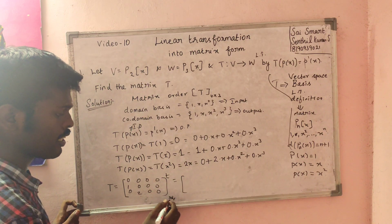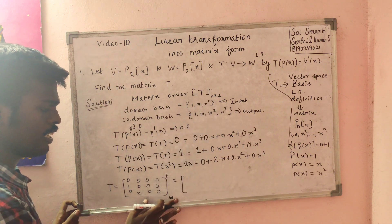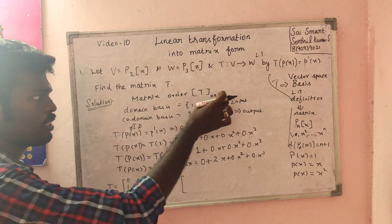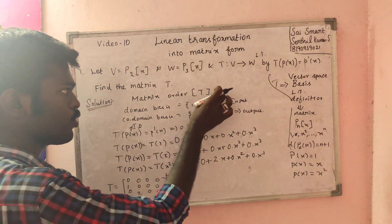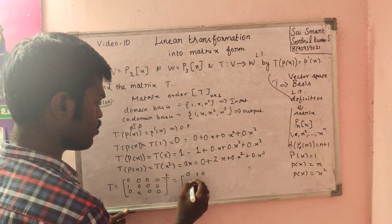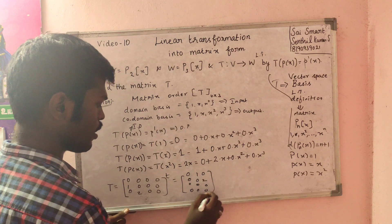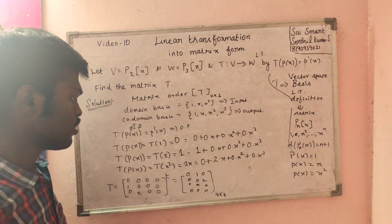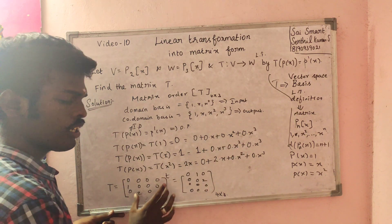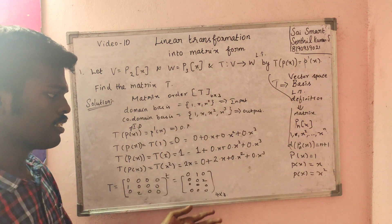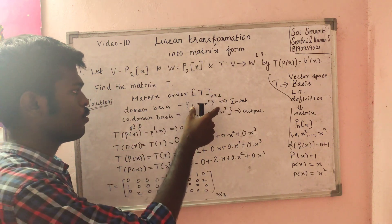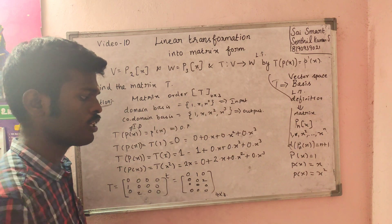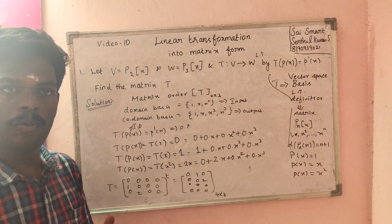The matrix is 4 by 3, not 3 by 4. Transpose confusion should be avoided. We write the transformation columns using domain input and codomain output. The coefficients of each basis image form the columns of the matrix.